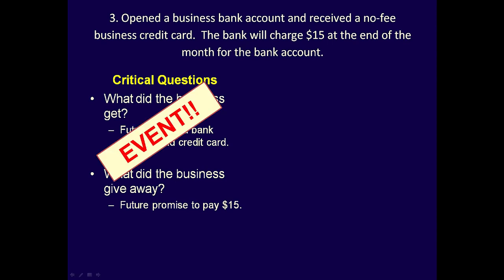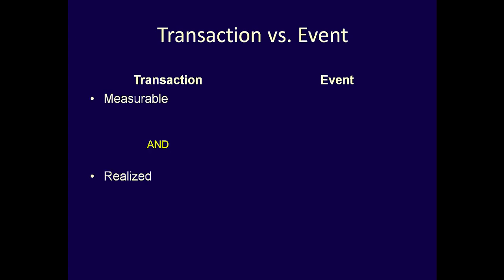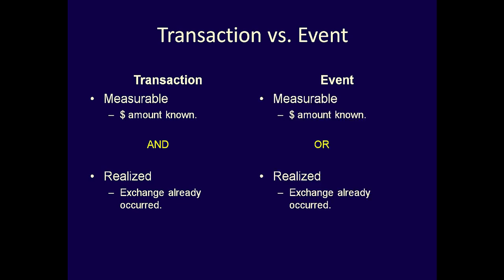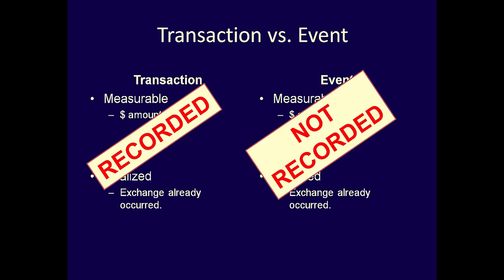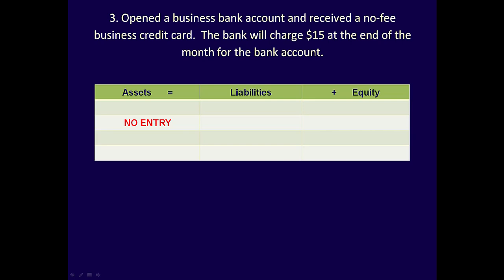This is an event and is not recorded into the business's financial accounting system. What is an event compared to a transaction? A transaction is a business activity which is measurable and realized. Measurable means there is a known value that can be determined — the bank account will cost $15 per month, so it is measurable. Realized means there has already been an exchange between two parties in the past; in this case, the business has not used the bank account or credit card, so there is no realization. This means this business activity is an event. An event is a business activity which is either measurable or realized, but never both. Transactions are recorded in the financial information system, but events are never recorded. Events have to be denoted as 'no entry' so that the marker knows you considered the business activity and came to a decision that it should not be recorded.